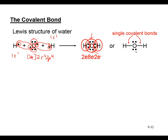Drawing the Lewis structure of water: there are two single covalent bonds to the hydrogens and two lone pairs on the oxygen. When showing the structure, if you draw the hydrogen bonds adjacent to one another and the lone pairs together, you can see it's a bent molecule, not linear. The actual bond angle in water is 104.5°, which we'll discuss more when talking about electron geometry.